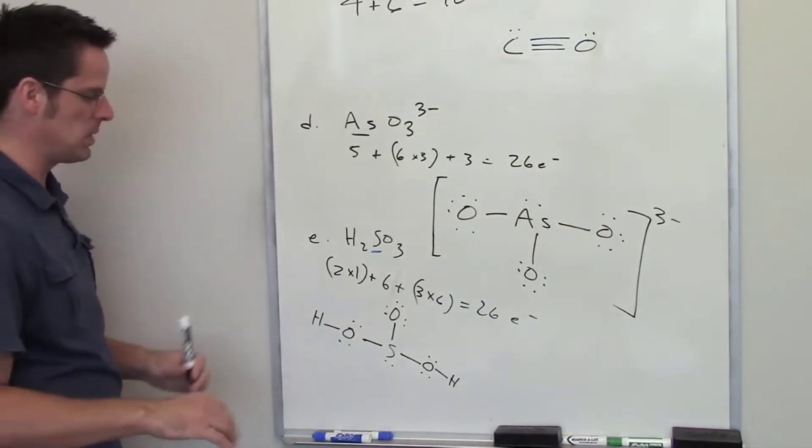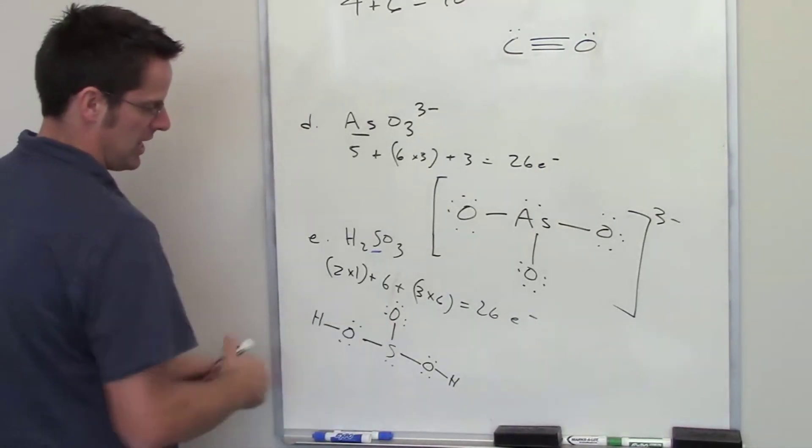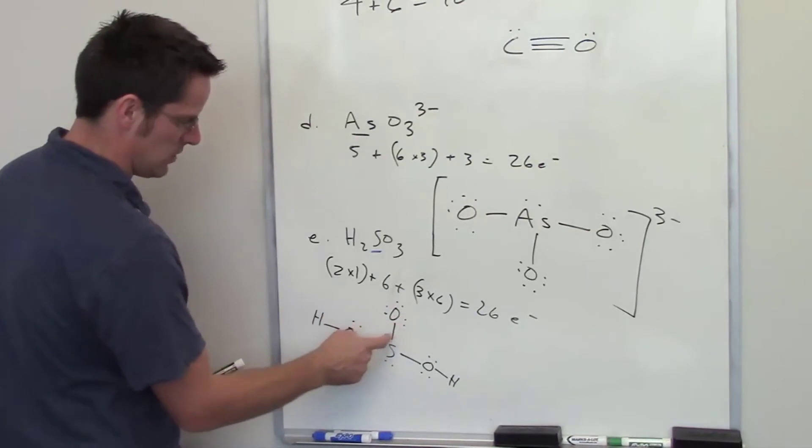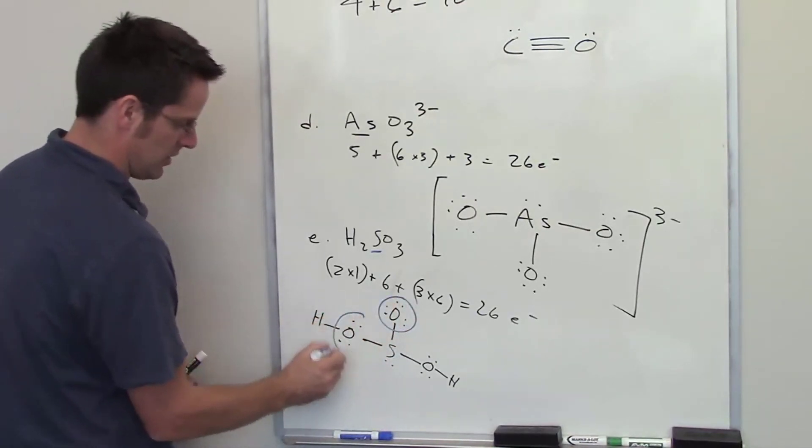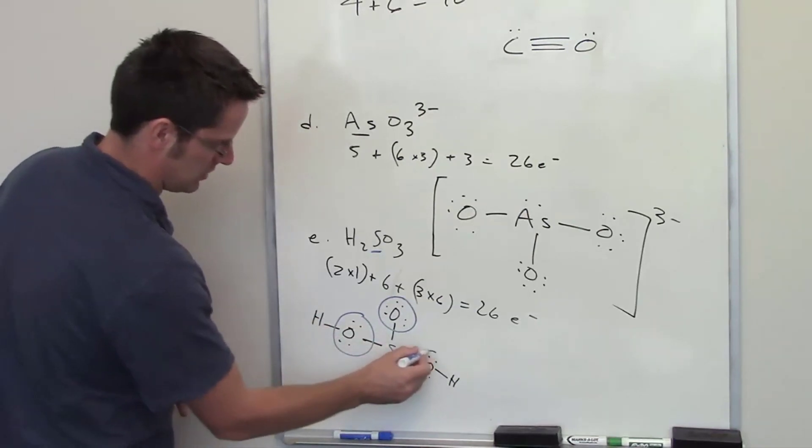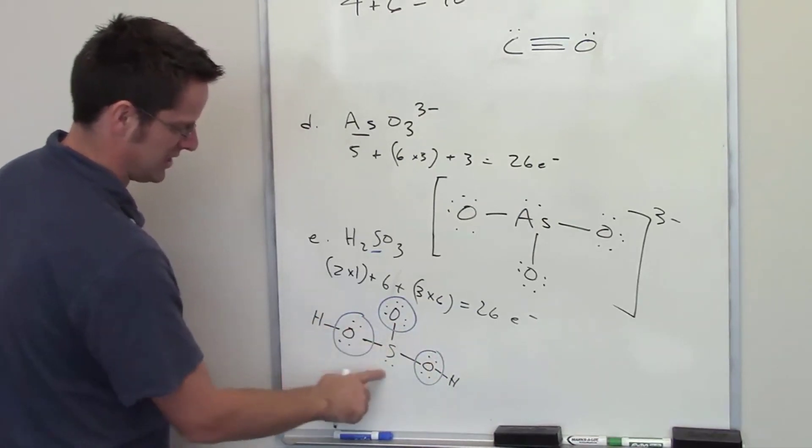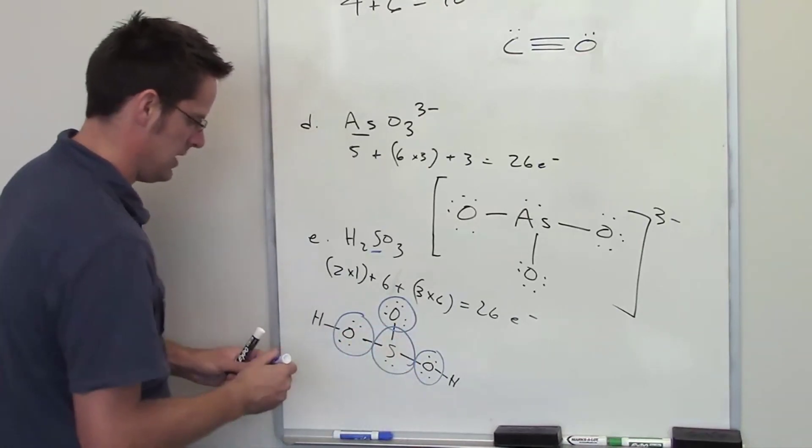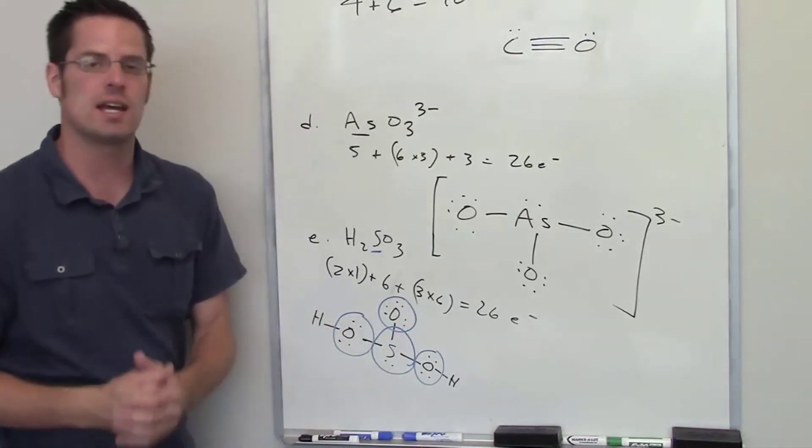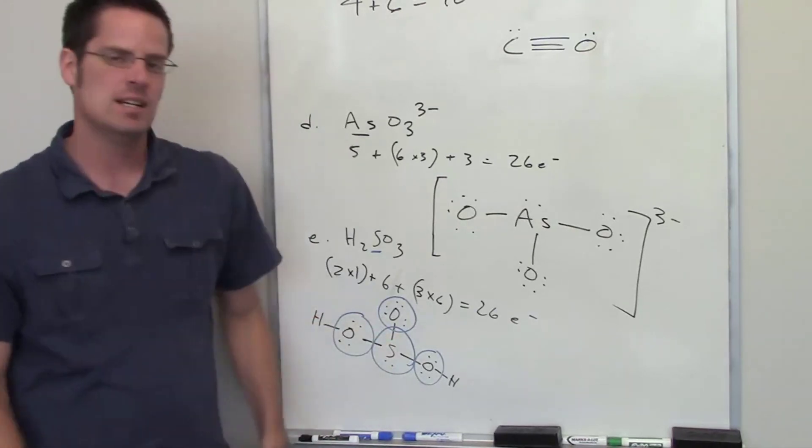Each of the oxygens has 2, 4, 6, 8 around it. I can go ahead and draw a circle there. And this guy also feels as if it has 8 around it, so does this one. And the sulfur has 2, 4, 6 in this one set of lone pairs, which also feels as if it has 8 around it. Does everybody feel like it has a full octet? Absolutely. So that is a correct Lewis structure.